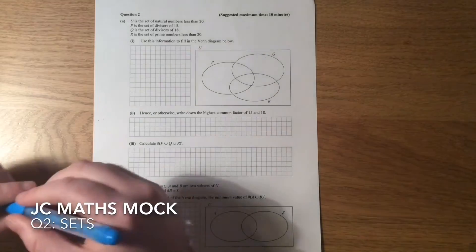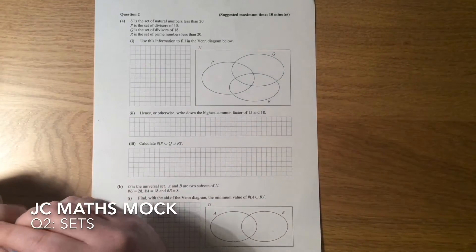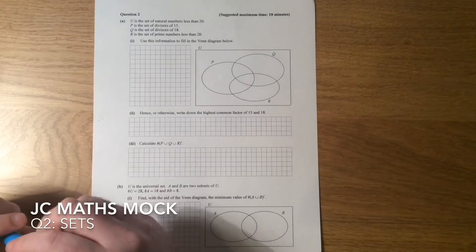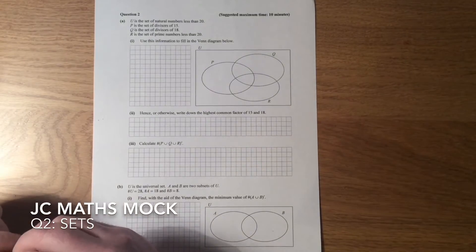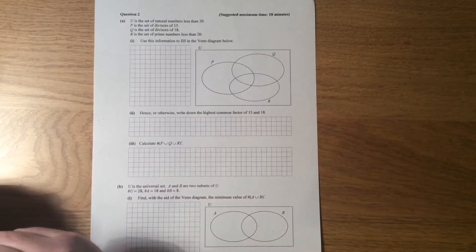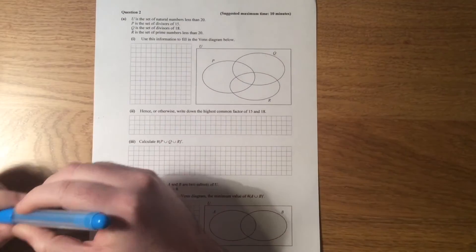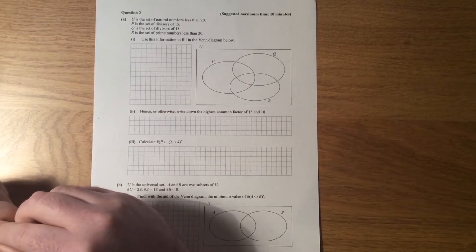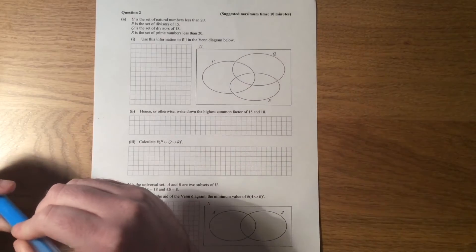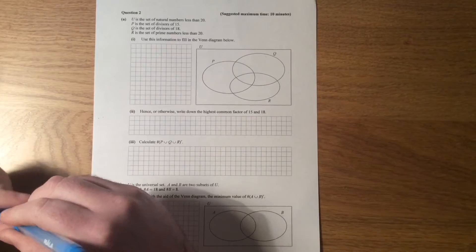Okay, so this is question 2 of the mock paper, Higher Level Junior Cert, and it's a sets question. So let's have a look. The universe is the set of natural numbers less than 20, so not including 20. P is the set of divisors of 15, Q is the set of divisors of 18, and R is the set of prime numbers less than 20.